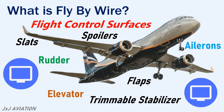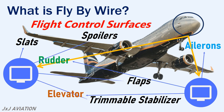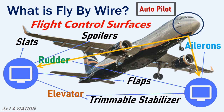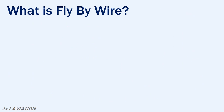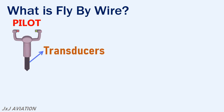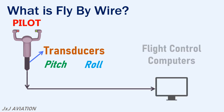The fly-by-wire system takes inputs from the pilot or the autopilot, which are processed by different computers and sent to the corresponding control surfaces. This can be used to pitch, roll, or yaw the aircraft. From the autopilot, electrical signals are directly sent to the computers. The inputs given by the pilots on the control stick are converted into electrical signals by different transducers that are installed at the base of the control stick. The transducers will determine how much pitch or roll maneuver is demanded by the pilots and send this information to the flight control computers.